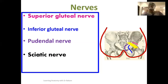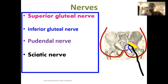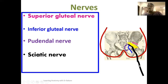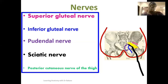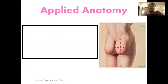The sciatic nerve is the largest branch from the sacral plexus, highlighted in black, providing innervations for the lower limb. It also passes through the gluteal region without supplying structures there, and is directed downwards to innervate the lower limb. The last nerve is the posterior cutaneous nerve of the thigh, highlighted in green, also emerging from the sacral plexus.